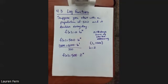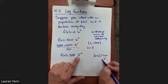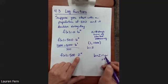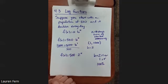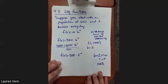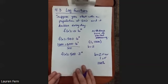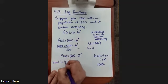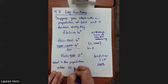Notice it makes sense that it's doubling because my b value is 2. If I want to find my growth rate, I solve for r, because 2 is 1 plus r, so we have 100% growth. Then we can ask: what is the population after 10 days?